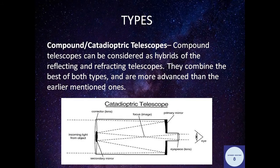Compound or catadioptric telescopes can be considered hybrids of reflecting and refracting telescopes. They combine the best of both types and are more advanced than the earlier mentioned ones.